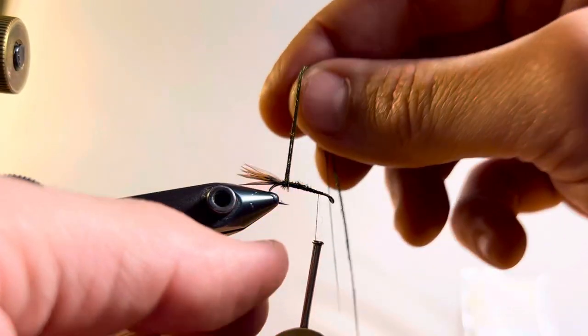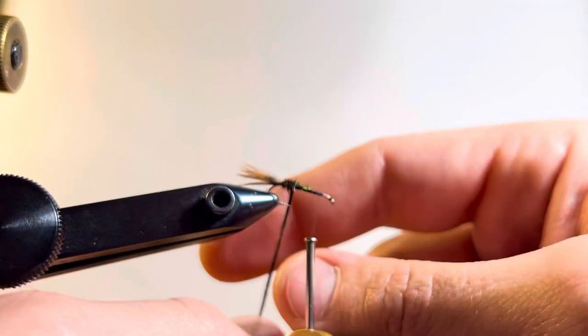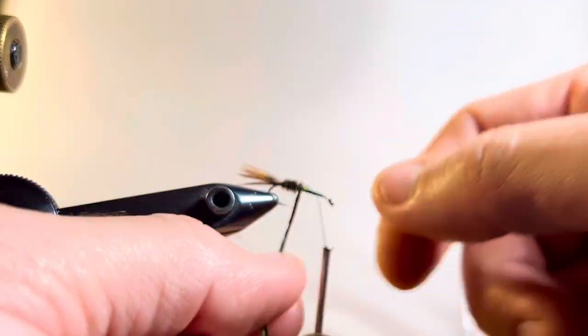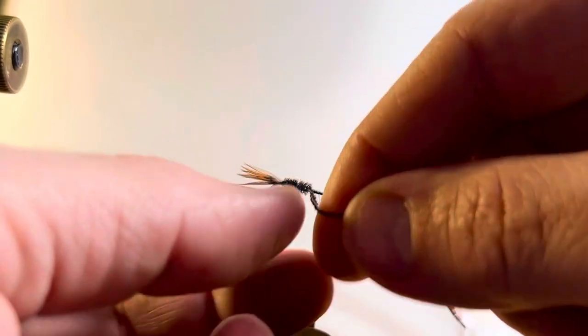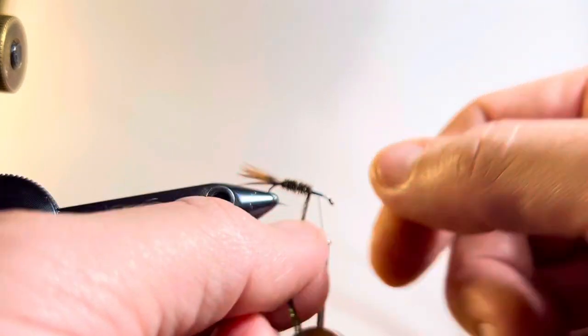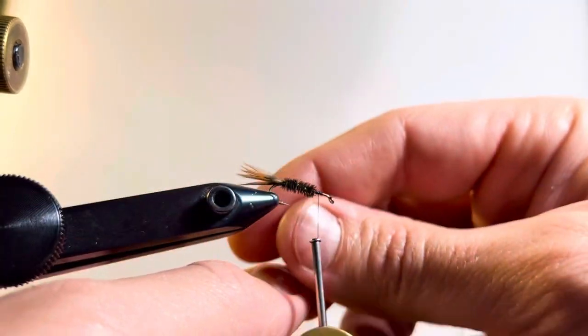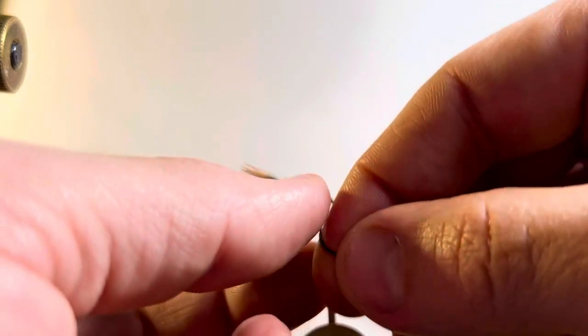Then we're going to wrap two peacock herls. Allows you to make it a little thicker, put together a little quicker, and it allows you that opportunity to get those little tiny fibers in there to make that great underbody. It's dense. It's sparkly. It's got that iridescence that looks like damselfly nymph or a little minnow or something that's shimmery under the water. I think it's just like we've talked about in the past, a pretty killer material for any nymph pattern.